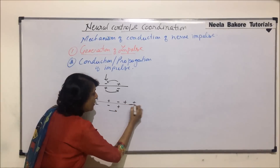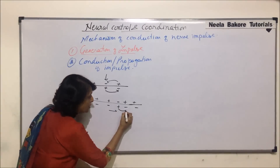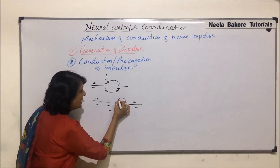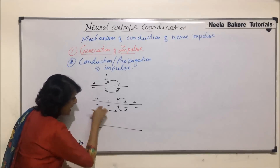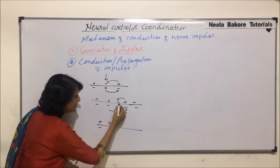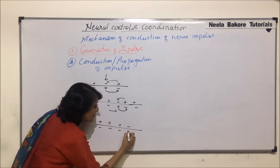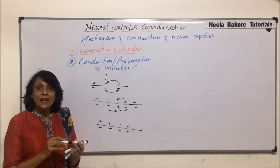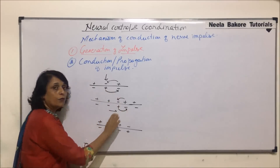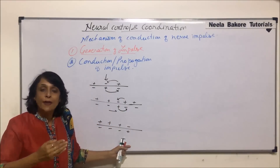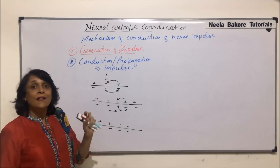Again, all along it is the same. This charge will be attracted by the negative and it will be attracted by this one. So next stage: position one and two remain the same; position three gets repolarized and position four will get depolarized. That means that small circuit has moved from two to three, three to four position, slowly going in a direction. And that is what is known as conduction or propagation of that impulse.